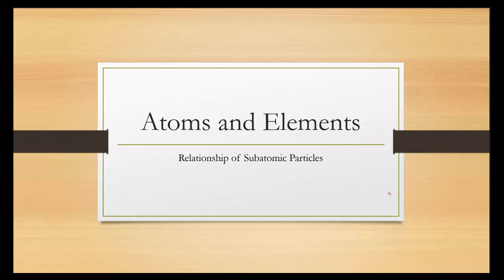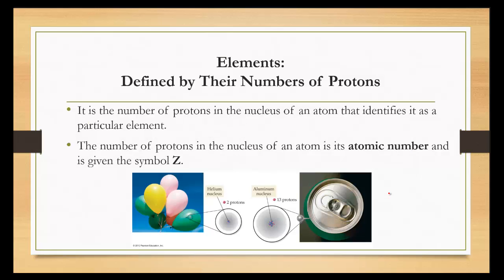In this tutorial, we will be discussing the relationship of subatomic particles. Elements are defined by the number of protons. It is the number of protons in the nucleus of an atom that identifies a particular element. The number of protons in the nucleus of an atom is called the atomic number, and it is given by the symbol Z. So that's one of the numbers that you're going to see on the periodic table.